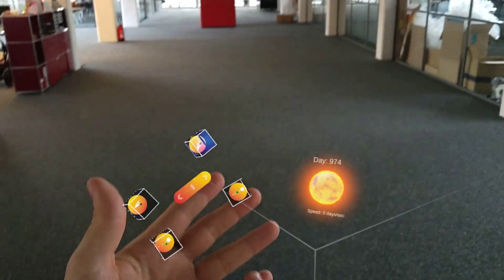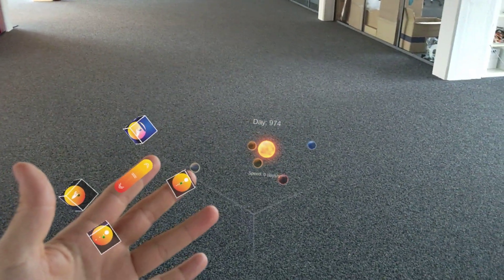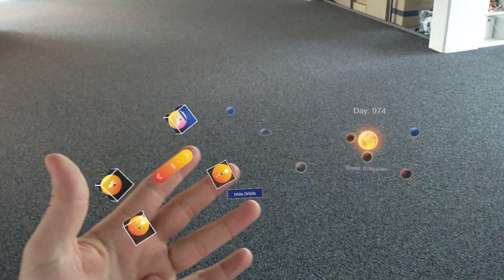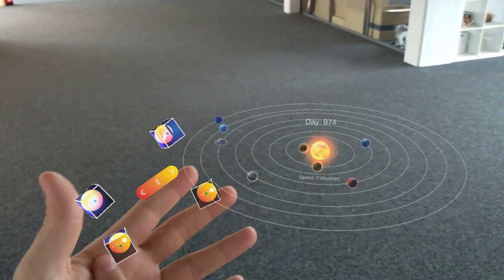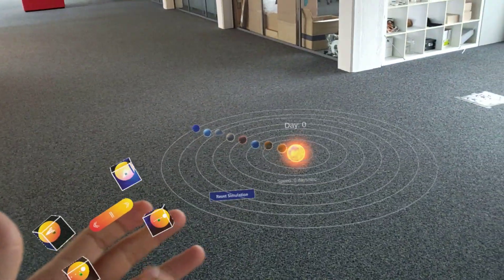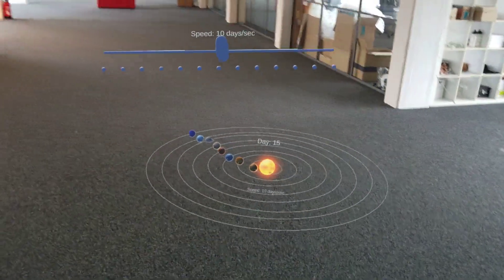I can hide the orbits, make the Solar System really small again, reset the simulation and let it play again from day one.